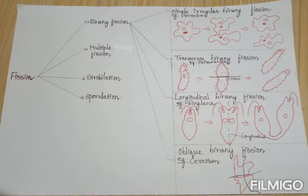First, we are going to learn about binary fission. In binary fission, the parent organism divides into two halves and each half forms a daughter individual.